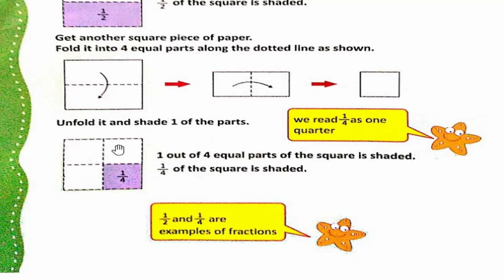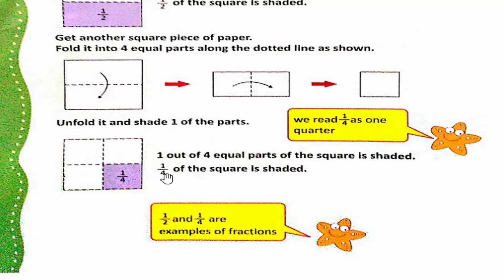So total parts kitne hain? One, two, three, four. So woh denominator hoga. Aur four mein se hum ne ek part ko shade kiya hai, so woh numerator hoga. So humara fraction kya banega? One by four. One out of four equal parts of the square is shaded. So one by four of the square is shaded.